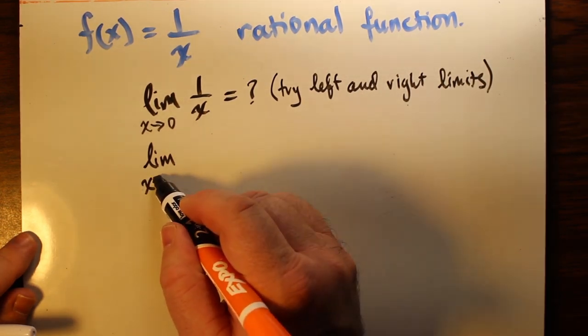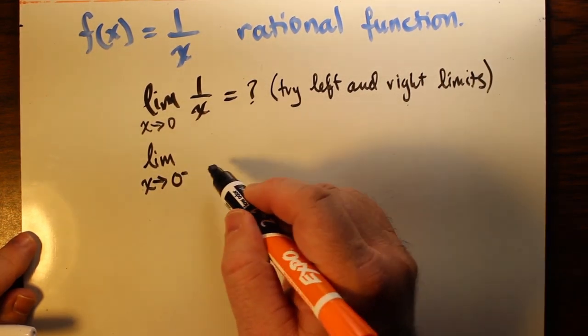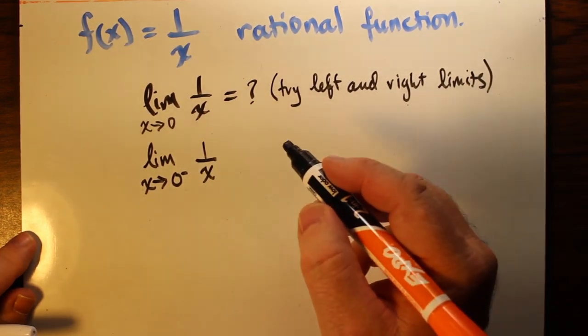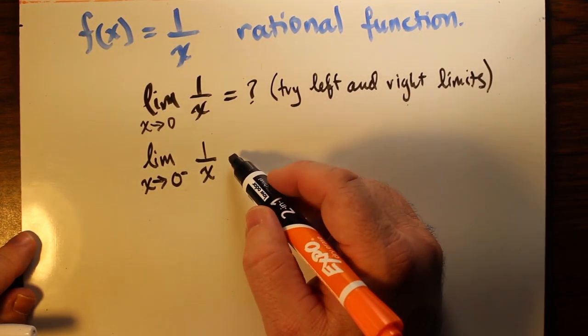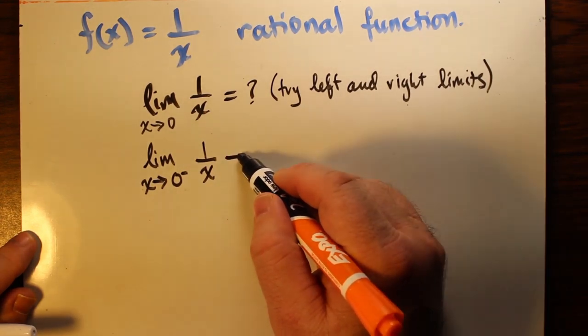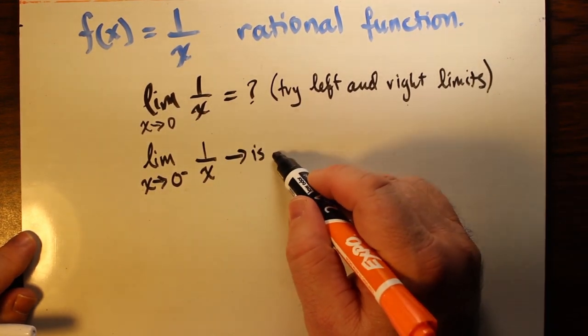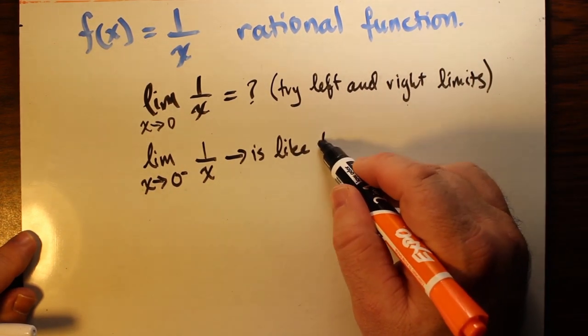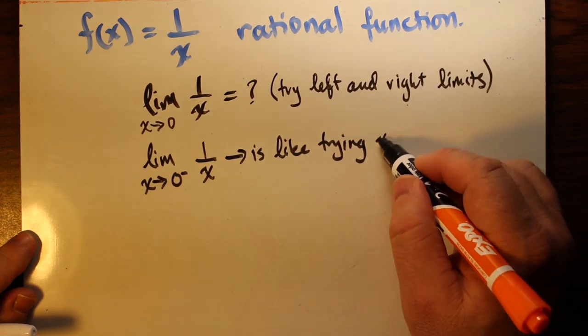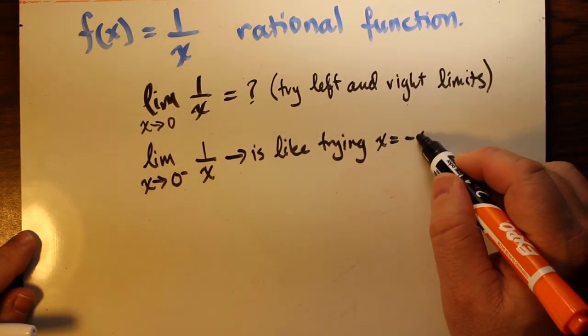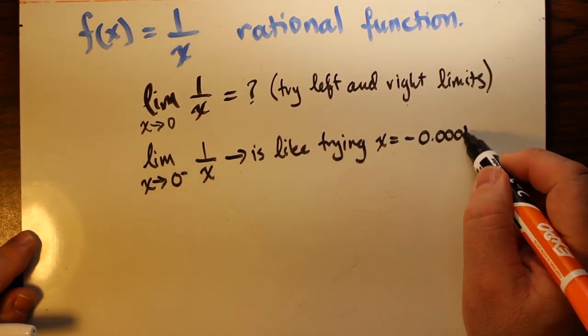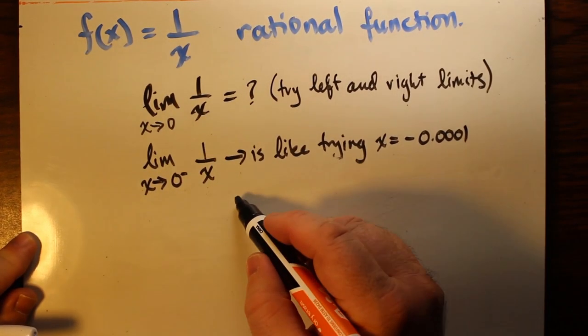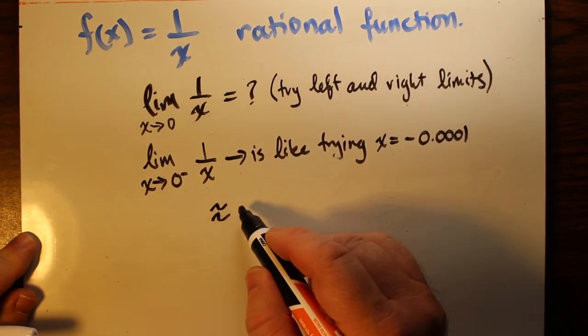But it's kind of hard to do unless we use left and right limits. If we approach from the left, that's what it means when the zero has a little minus sign written like an exponent. For 1 over x, this is like substituting in a number close to x but less than x, like negative 0.0001.